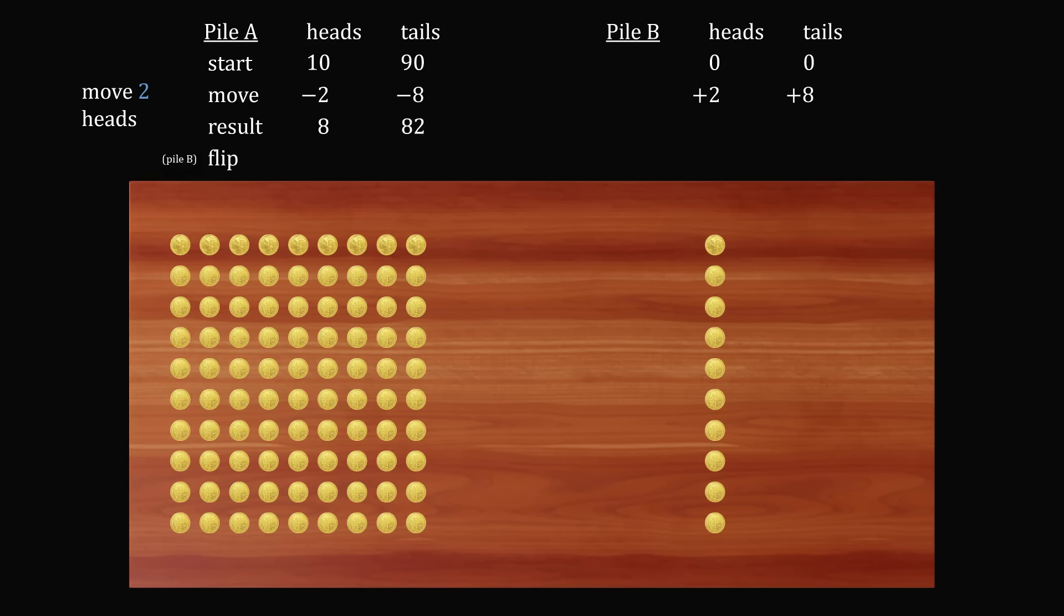Those would be added to pile B. The result is that the first pile would have 8 and 82 for heads and tails. And the other pile would have 2 and 8 for heads and tails. When we flip the two numbers, we end up that the number of heads in pile B is 8 and the number of tails is 2. And this exactly matches the number of heads that is in pile A. So once again, both piles are showing the same number of heads.